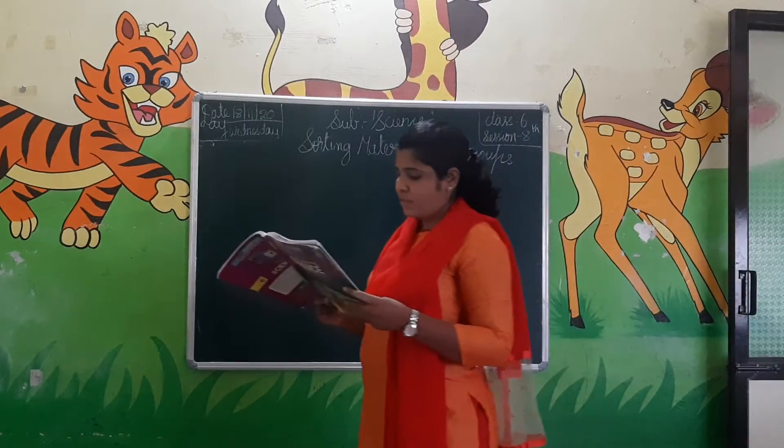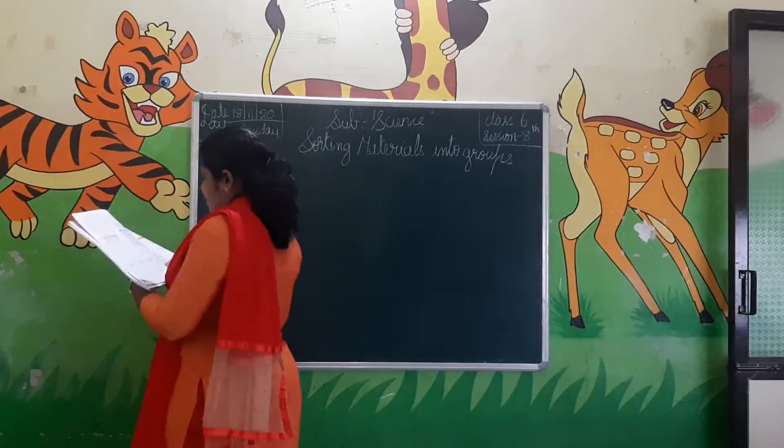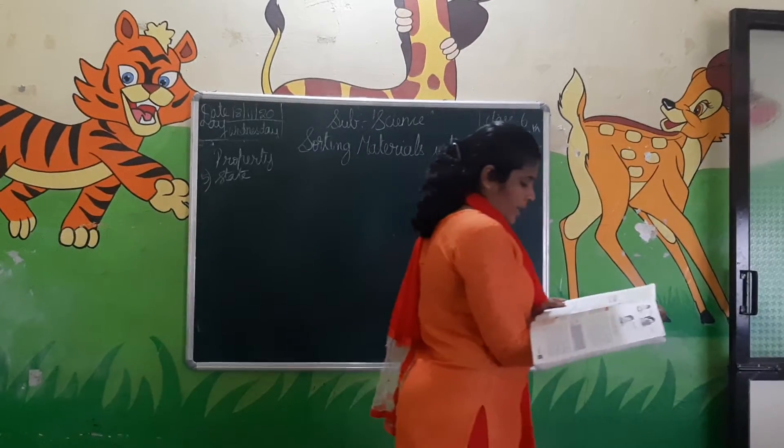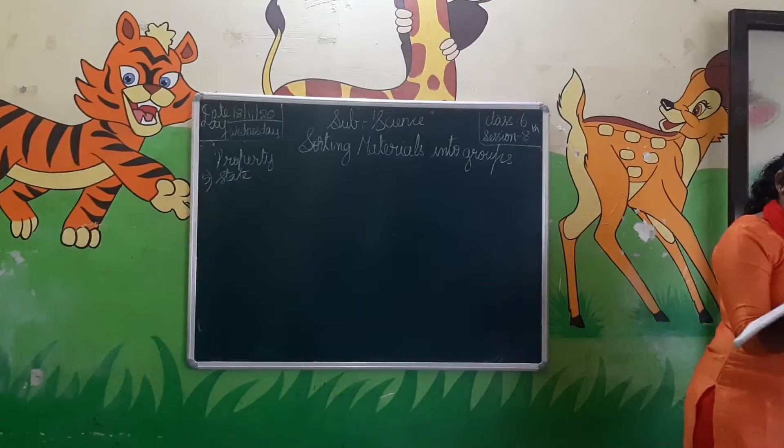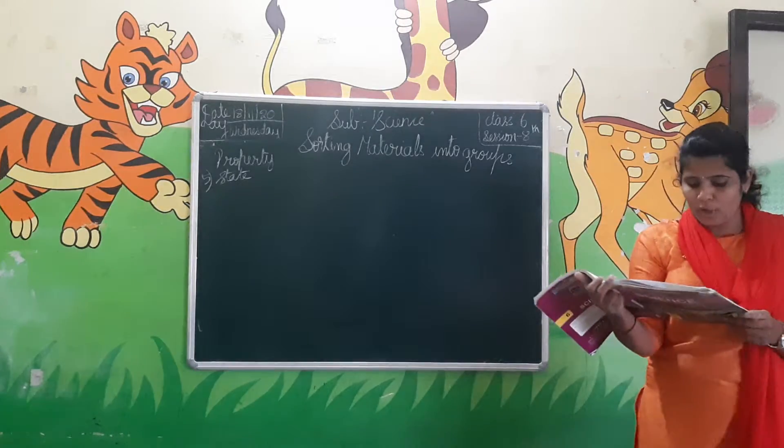Next we go to the fifth property, which is state. Most of the materials are grouped on the basis of their physical state into solid, liquid, or gas. The main differences between these three states are given in table 4.2.